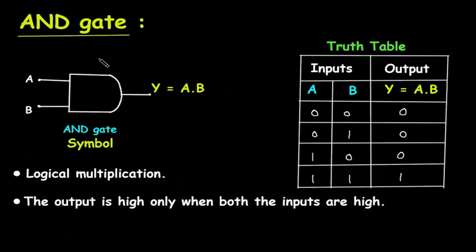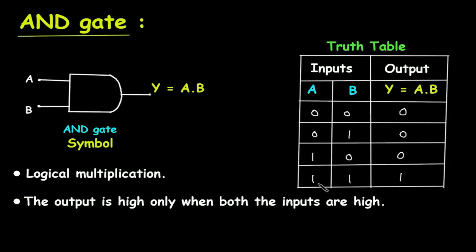AND gate — this is the symbol for AND gate. There are two inputs: A and B are the inputs, and Y is the output. This AND gate performs logical multiplication. Here we can see the truth table for AND gate. The output is high only when both the inputs are high — that is, 1 and 1: high and high equals high.